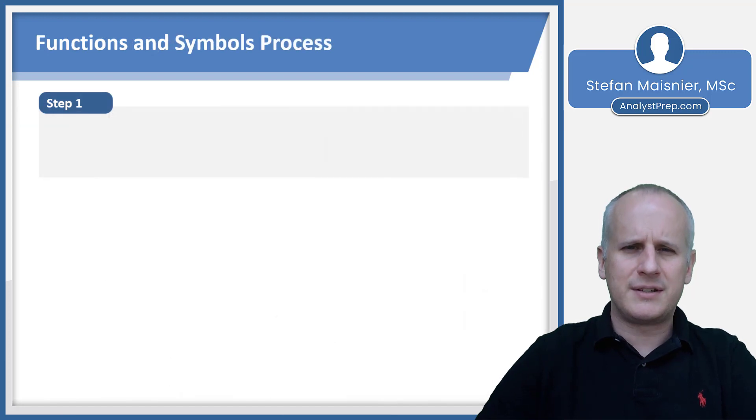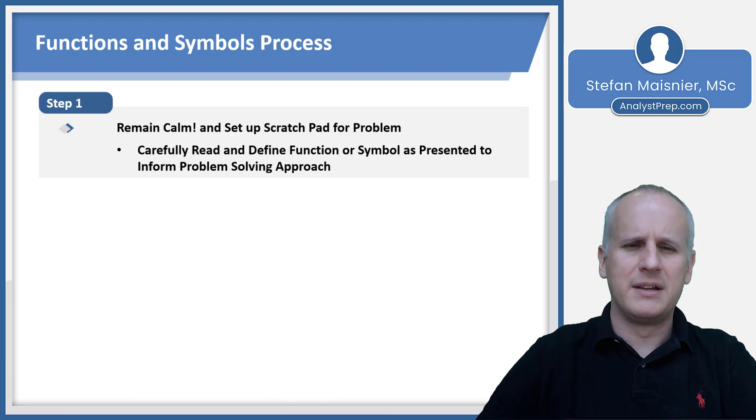Step one for the symbols and function process: remain calm and set up your scratch pad for the problem. Carefully read and define the function or symbol as presented to inform your appropriate problem solving approach as well. All four of our problem solving tactics—a technical approach, logical evaluation or estimation, modeling and back solving—are possibly viable for function and symbol problems.